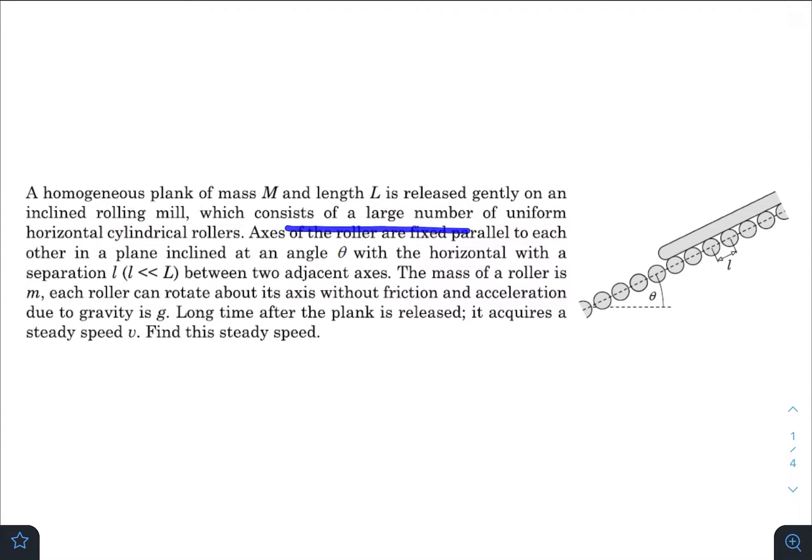The rolling mill consists of a large number of uniform horizontal cylindrical rollers. Axes of the rollers are fixed parallel to each other in a plane inclined at an angle theta with the horizontal, with a separation of small l which is very much less than capital L.